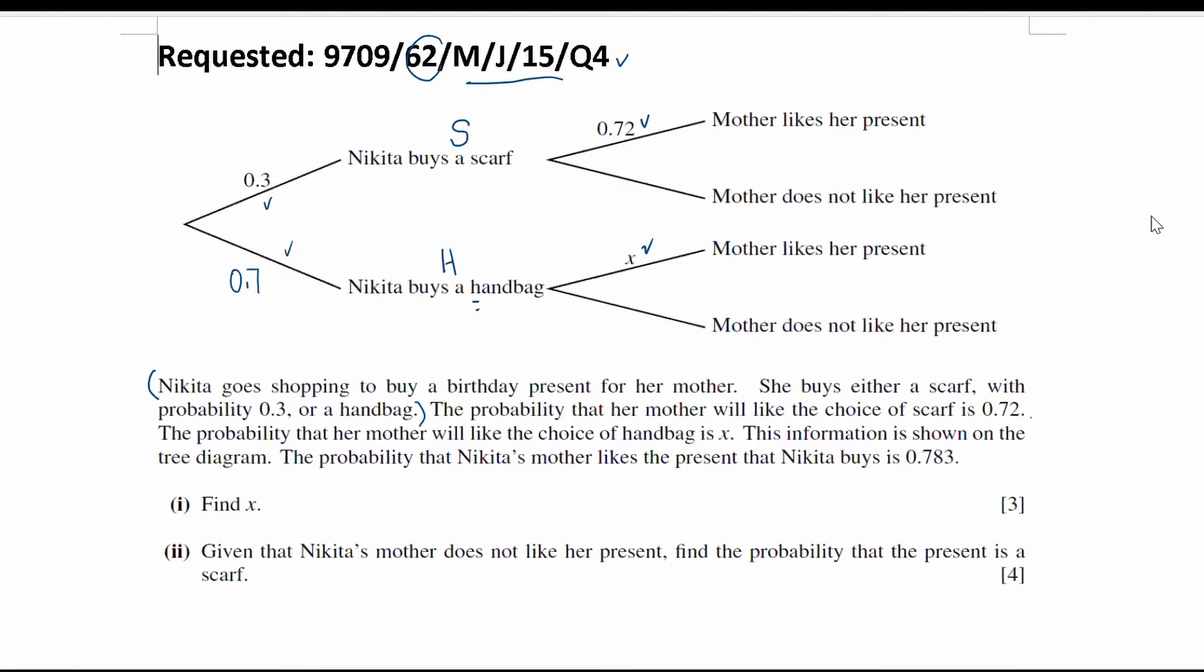Let's use capital L to represent that Nikita's mother likes her present. That means the probability that her mother likes the present is 0.783. Now part one, find X.